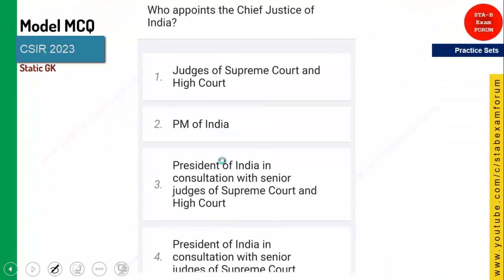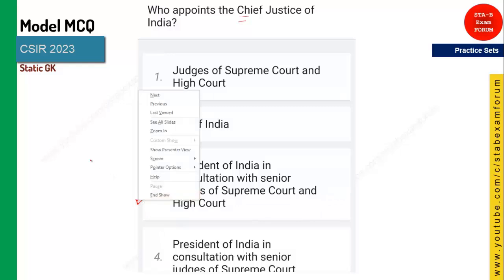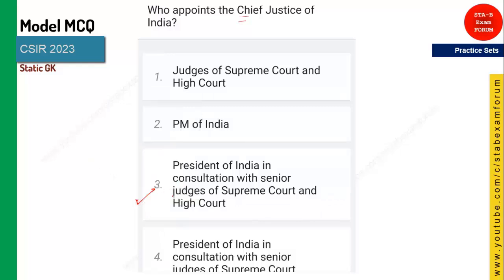The next question: who appoints the Chief Justice of India? He holds the top legal position in India. The answer is the President of India in consultation with the senior judges of the Supreme Court and High Court.